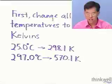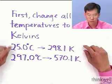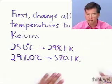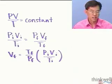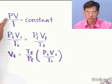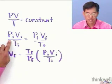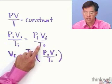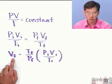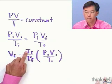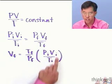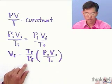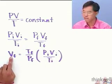The first thing you have to do is convert temperatures to Kelvins. You add 273.1 to the Celsius temperatures to get the Kelvin temperature. Now let's examine the combined gas law more closely. We have P times V over T equal to a constant, which we can express as: P initial times V initial over T initial equals P final times V final over T final. Solving for final volume, V final equals T final over P final times P initial times V initial divided by T initial.